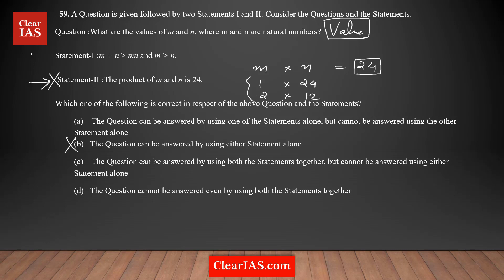Now I'm going to analyze Statement 1 alone, without using any information from the other statement. Statement 1 says the sum of m and n is greater than their product, and m must be greater than n. I'm going to use the number-picking strategy to check whether you get a unique value or multiple values are possible.